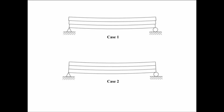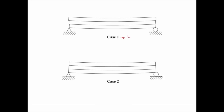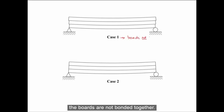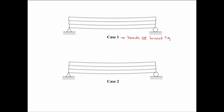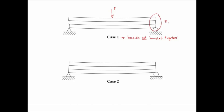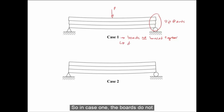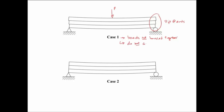Let's illustrate this with an example. In this example, three identical boards are stacked to form a beam. In the first case, the boards are not bonded together. If this beam is loaded with a point load P at mid-span, we're going to get slip at the ends. Because the boards are not bonded together, they do not act as a composite — rather, they act independently and each supports a third of the applied load.